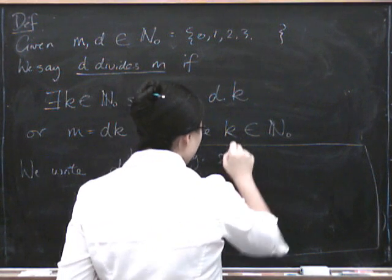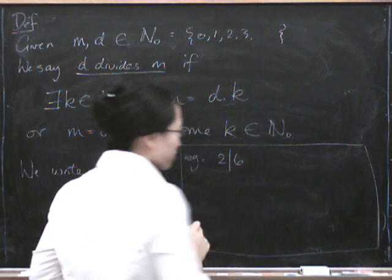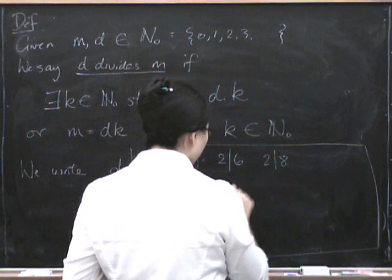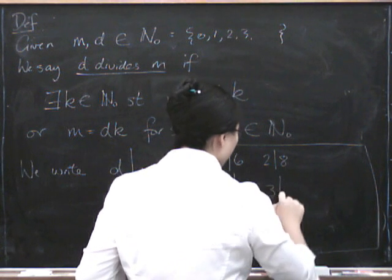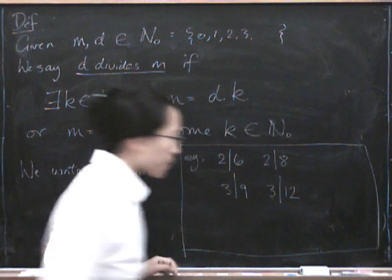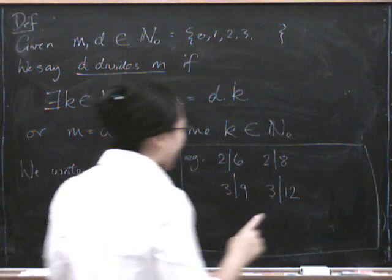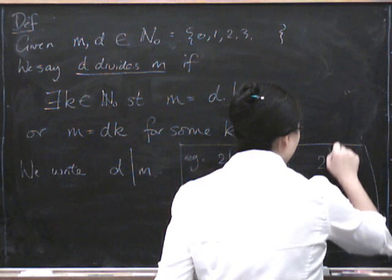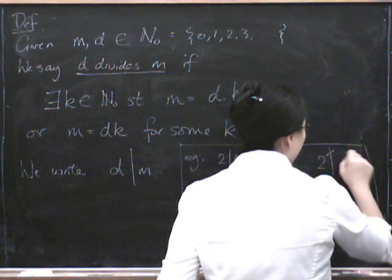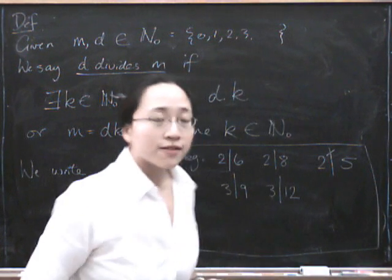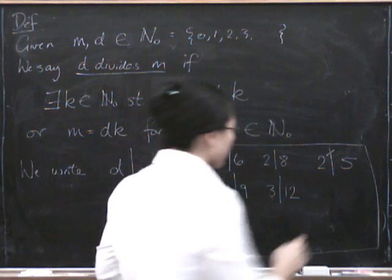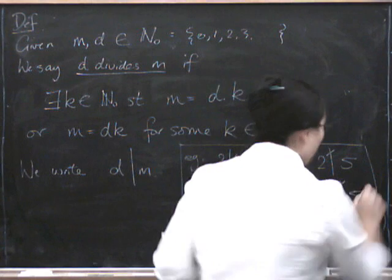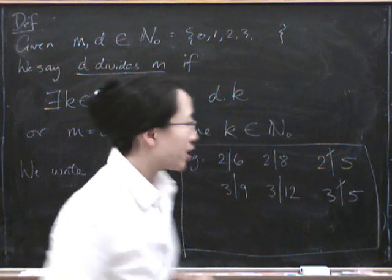So 2 divides 6, 2 divides 8, 3 divides 9, 3 divides 12. We can also say something doesn't divide something else. So 2 does not divide 5. And we put a little line through our divide thing to show that that's not true. And 3 also doesn't divide 5.